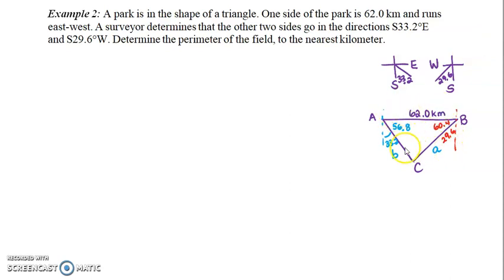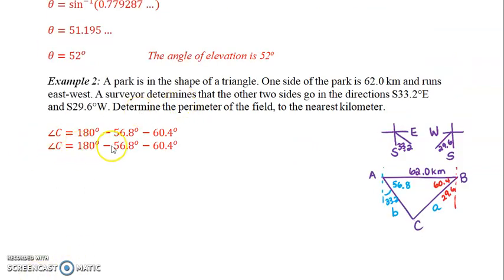It wants to find the perimeter. So we're going to need A and B. We do know angle C because if we have two angles in a triangle, we can easily calculate angle C. Angle C is just simply adding these two and subtracting them from 180. So angle C is equal to 180 minus 56.8 minus 60.4, which gives me 62.8 degrees. So that's angle C down here.